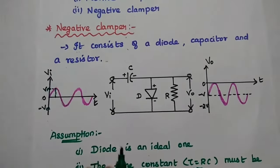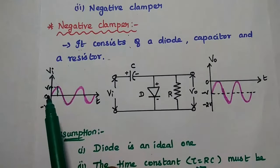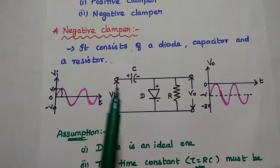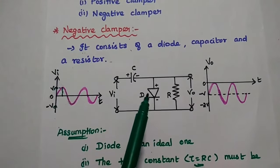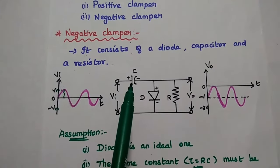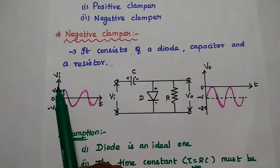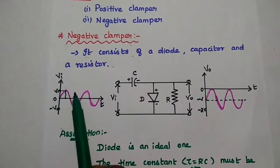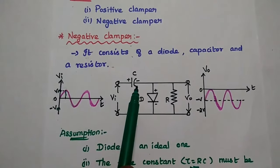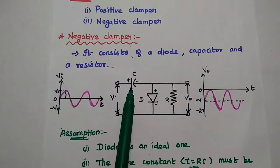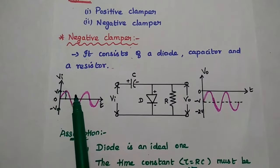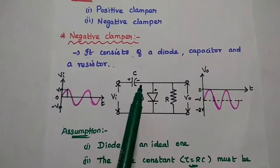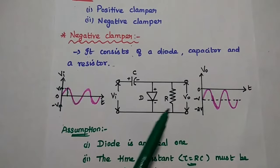Let's discuss the operation. During the first quarter of the positive half cycle, the diode is forward biased because the input is positive. The capacitor gets charged up to the maximum voltage Vm. During the first quarter of the positive half cycle, the capacitor starts charging up to maximum voltage Vm. Once it reaches that maximum voltage, the capacitor can act as a battery and there is no output across the resistance.